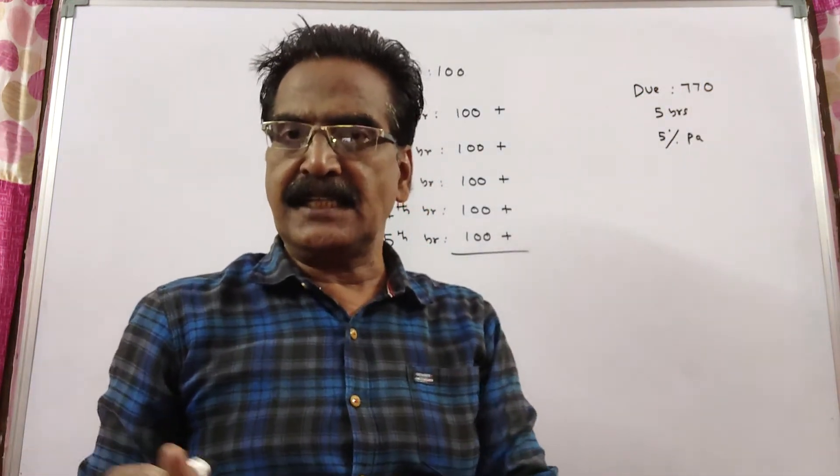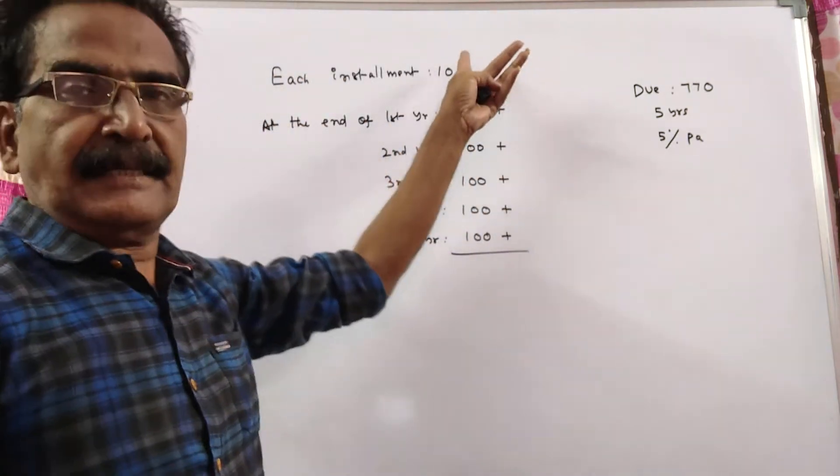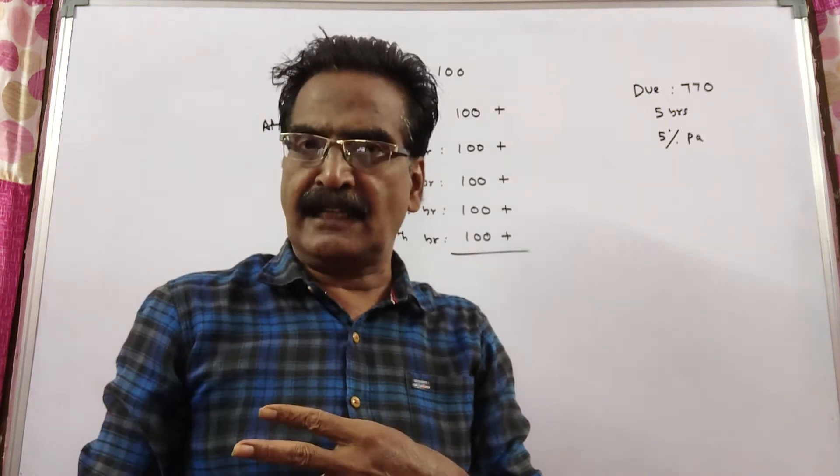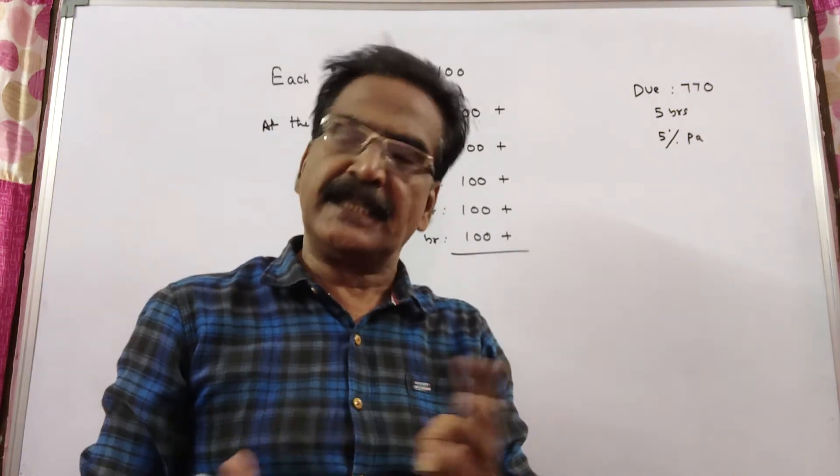Say each installment is Rs. 100. That is, we pay 100 at the end of first year, 100 at the end of second year, 100 at the end of third year, and so on.